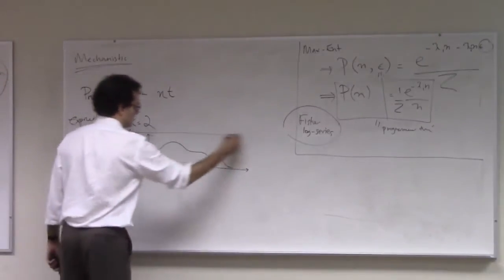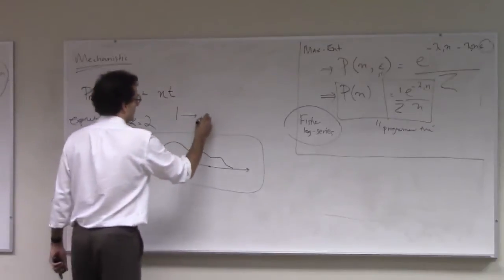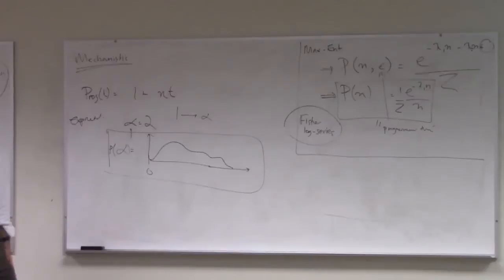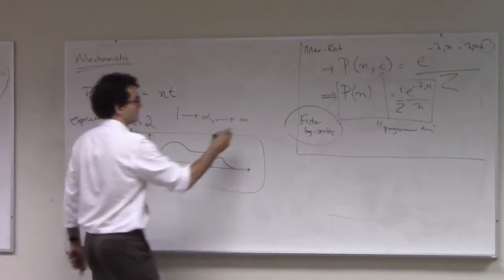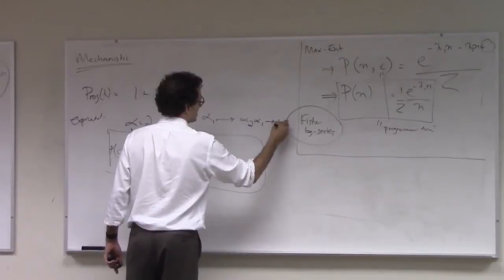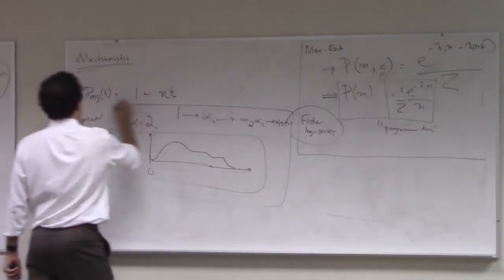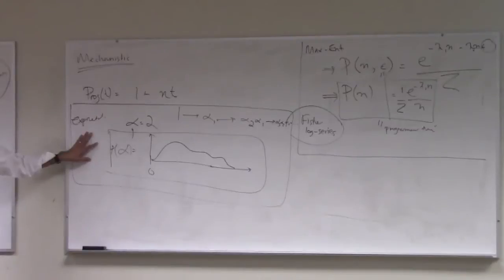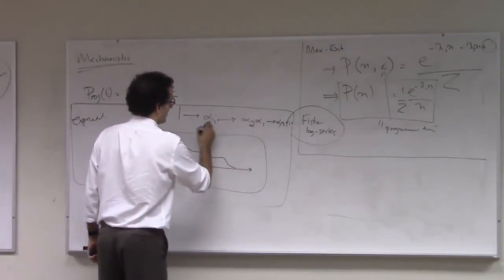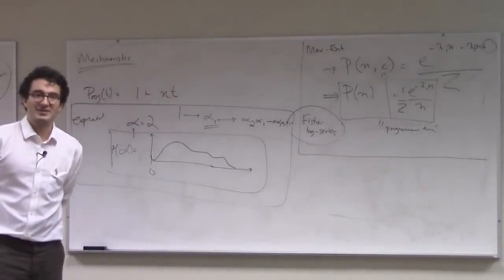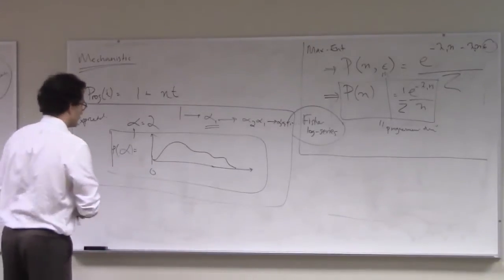Each day, we're going to draw a number alpha from this distribution. After one day, there are alpha programmers - or rather alpha one programmers, this is the draw on the first day. On the second day, there's alpha two times alpha one programmers, and so on. Alpha three times alpha two times alpha one. This is now growth that occurs through a random multiplicative process. It's similar to growth that would happen through a random additive process, except now, instead of adding a random number of programmers each day, you multiply the total number of programmers each day by some factor alpha drawn from this distribution.